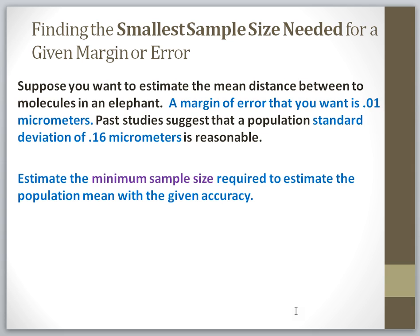In this example, we're being asked to find the smallest sample size needed for a given margin of error. In this particular problem, my goal is actually to calculate a sample size. And I need to know what margin of error they're looking for so that I can give them the sample size that they need. A margin of error is how wrong you're probably going to be, or how far your estimate is going to be from the actual population parameter.